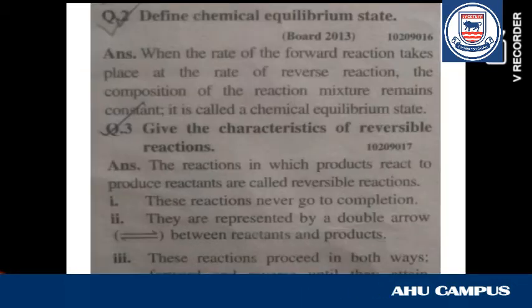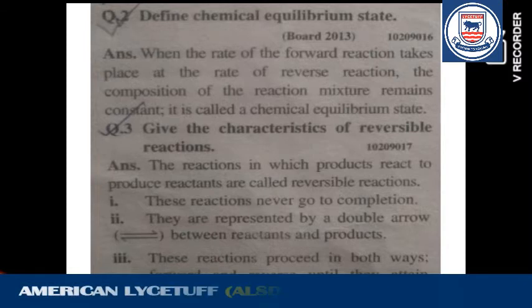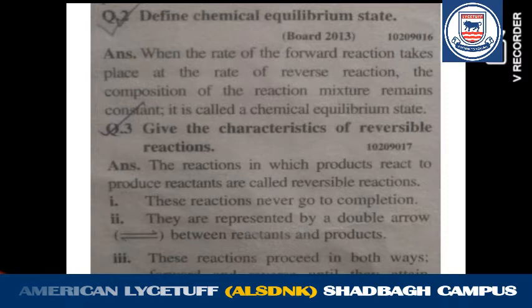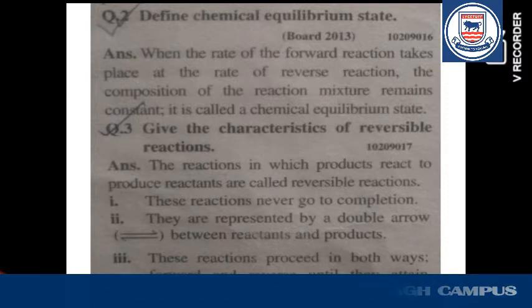Your next short question is: define chemical equilibrium state. Remember the definition from your book. When the rate of forward reaction equals the rate of reverse reaction, the composition of the reaction mixture remains constant — this is called the chemical equilibrium state. It has two types: static and dynamic.